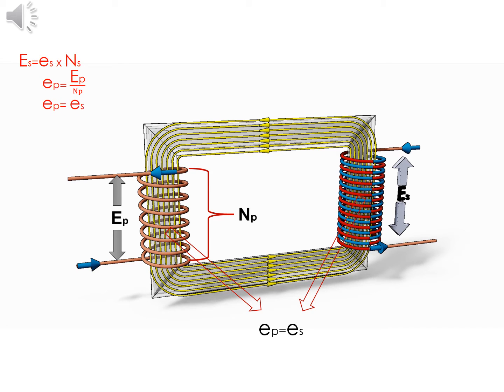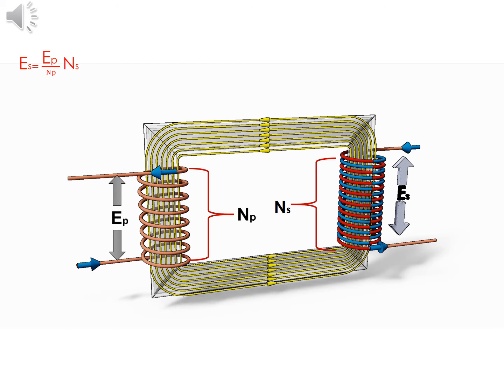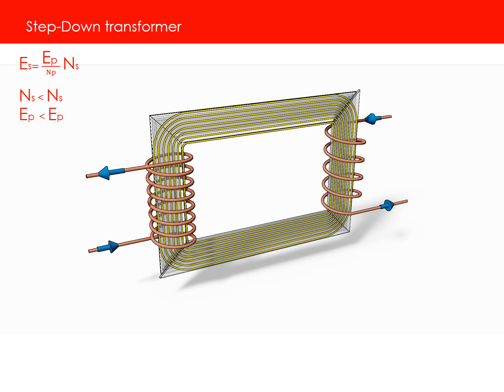The EMF per turn for the primary coil is related to the applied input voltage as shown. As a result, the induced EMF at the secondary coil is expressed as follows. This simply means that with fewer turns in the secondary than in primary, one can lower the voltage.